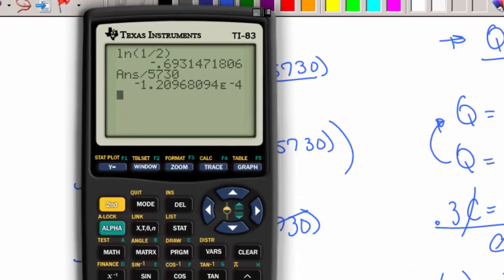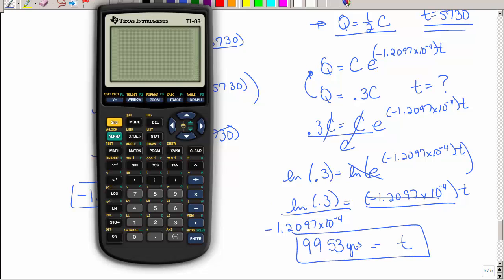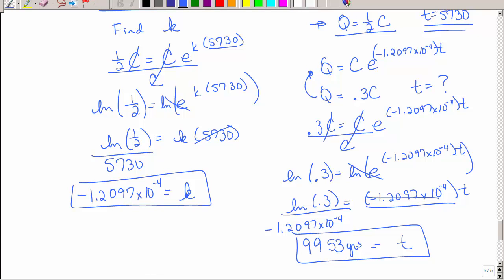OK, so I have my K value in my calculator, which is what I want to divide by. So I'm going to take the natural log of 0.3, close my parentheses, say divide by answer. You don't have to use that answer key. I just think it's very convenient and punch enter. So it's going to be 9,900 and about 53 years old. That's how old the piece of wood is.